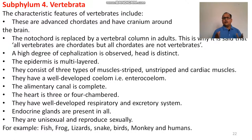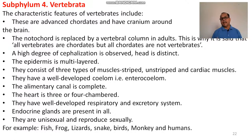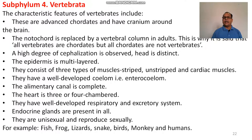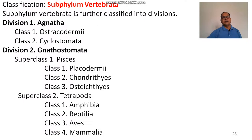The heart is two, three, or four chambered: two-chambered in fish, three-chambered in Amphibia and Reptilia, and four-chambered in birds and mammals. They have well-developed respiratory and excretory systems. Endocrine glands are present in all vertebrates, and hormonal control is found in all of them. They are unisexual and reproduce sexually. Examples of vertebrates include fish, frog, lizard, snake, bird, monkey, and humans.